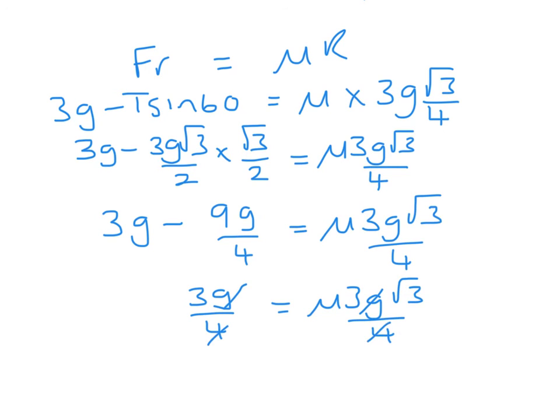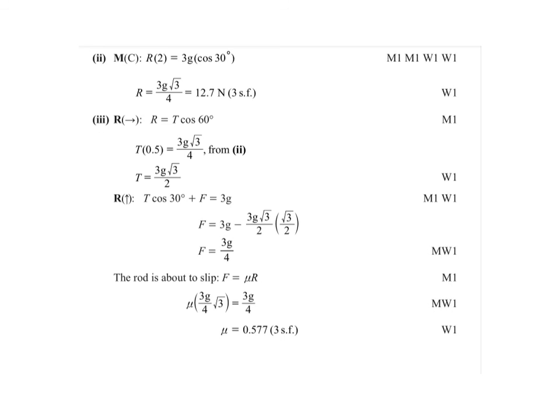g's cancel, 4s cancel, 3s cancel, and that leaves me with mu equals 1 over root 3. Now when I was doing part 3, I worked exactly, and you can see that the mark scheme works exactly as well until the final answer where they have given the decimal answer. At any stage in the question you can use decimals rather than thirds, but just be careful you need to work to four significant figures until your final answer which you give to three.